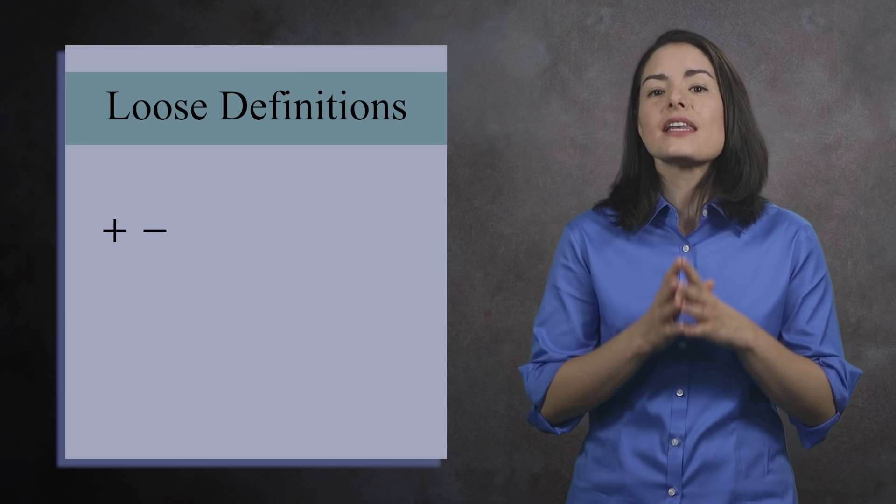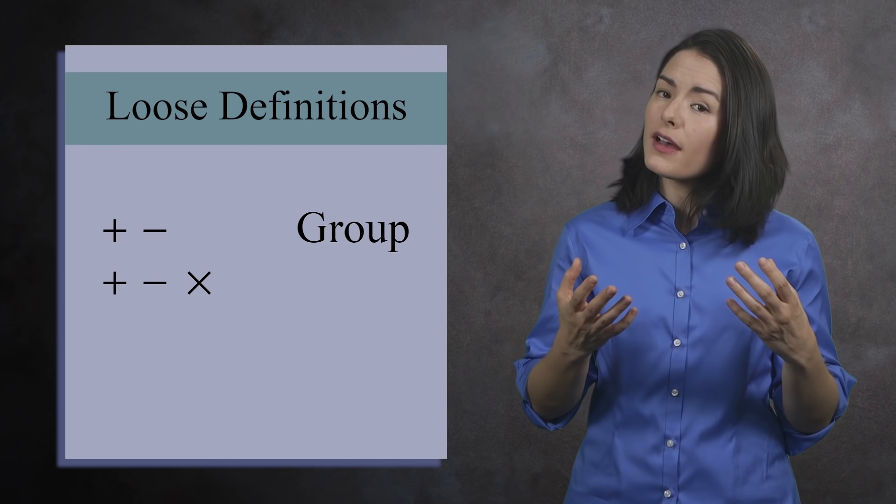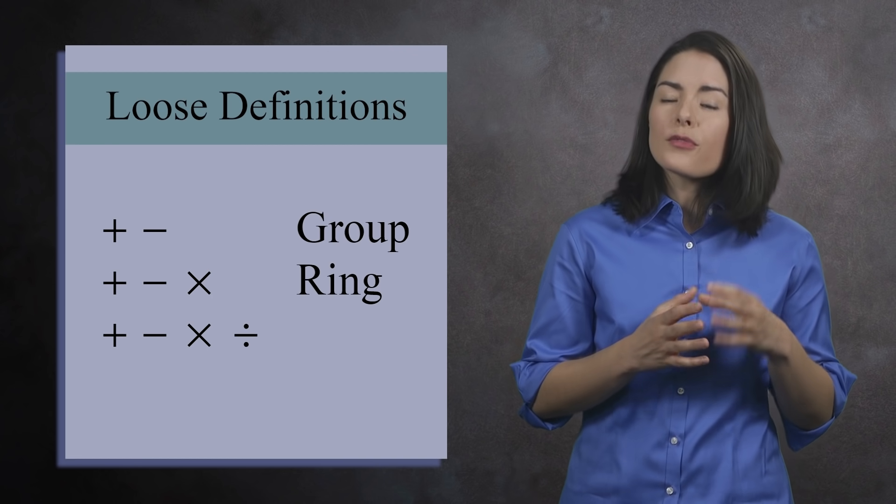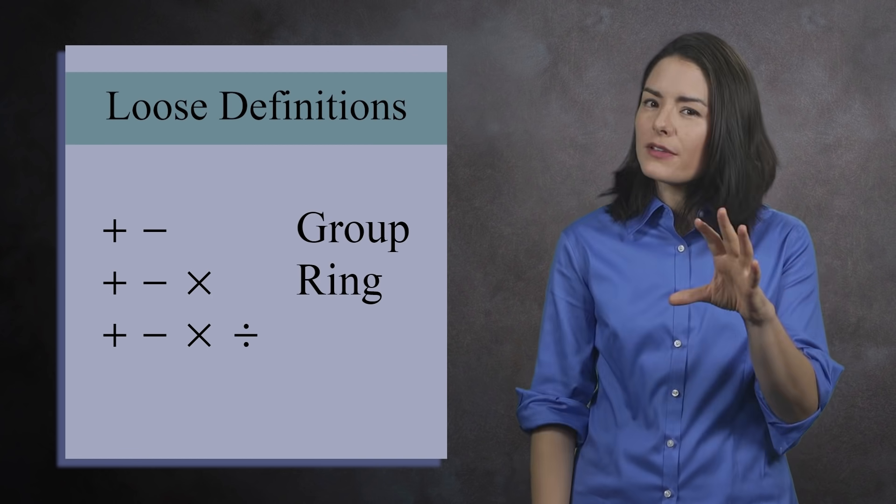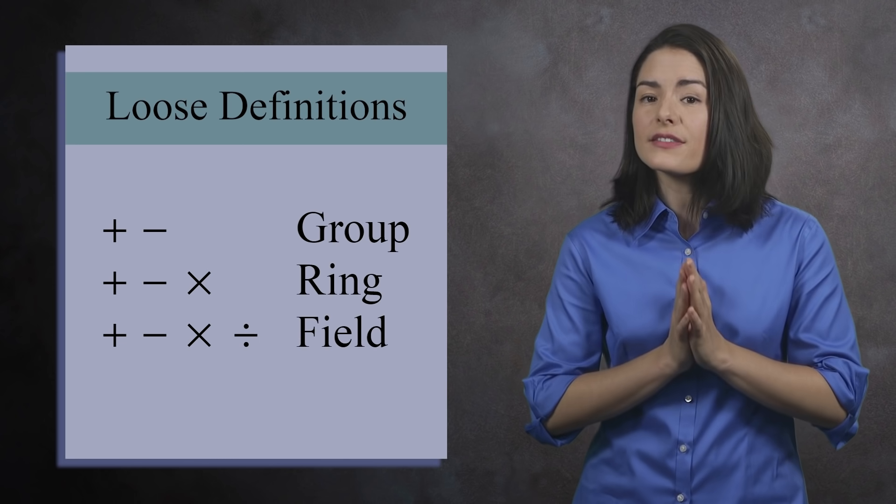Loosely speaking, if you can add and subtract, you have a group. If you can add, subtract, and multiply, you have a ring. But if you're lucky and get all four operations, the result is an object that behaves similarly to the numbers you learned about in arithmetic and algebra. We call these fields.